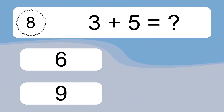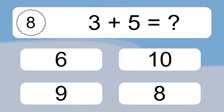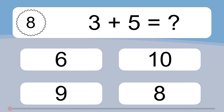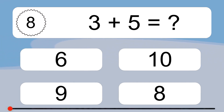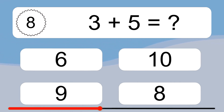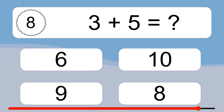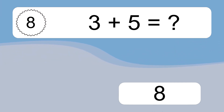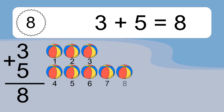3 plus 5 equals what? 3 plus 5 equals 8.